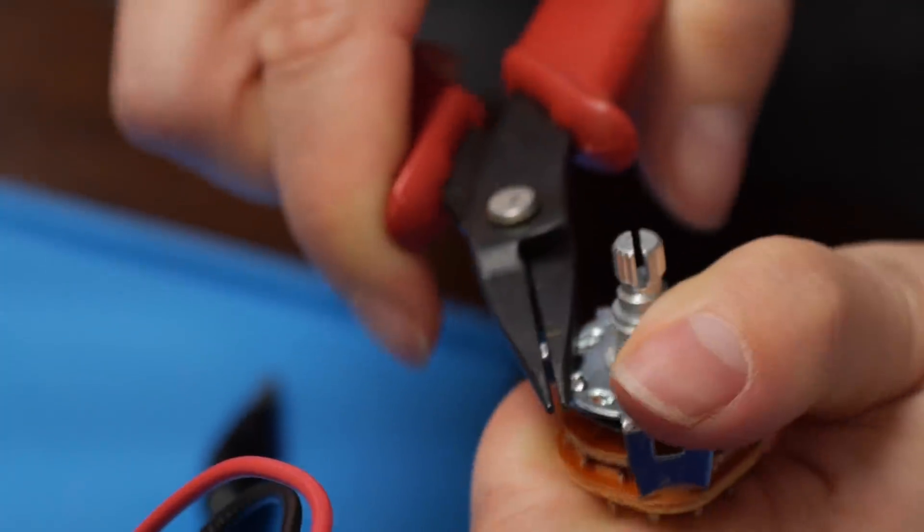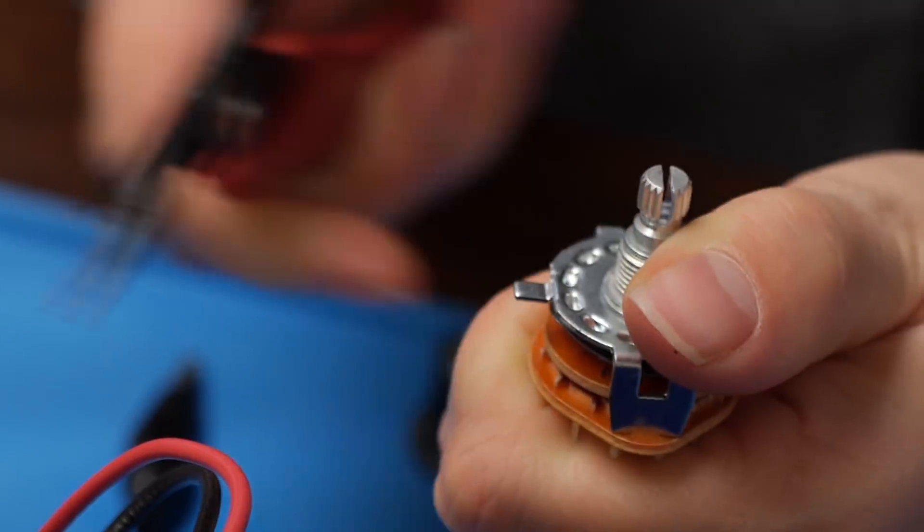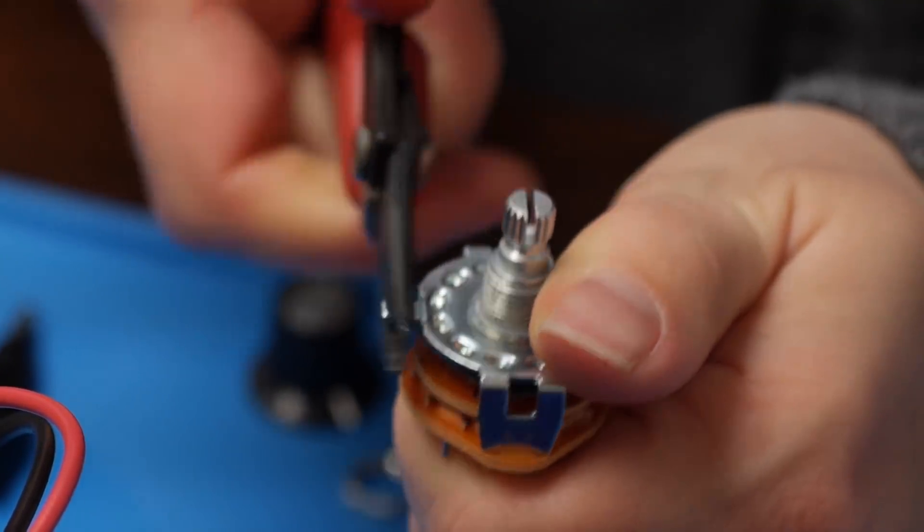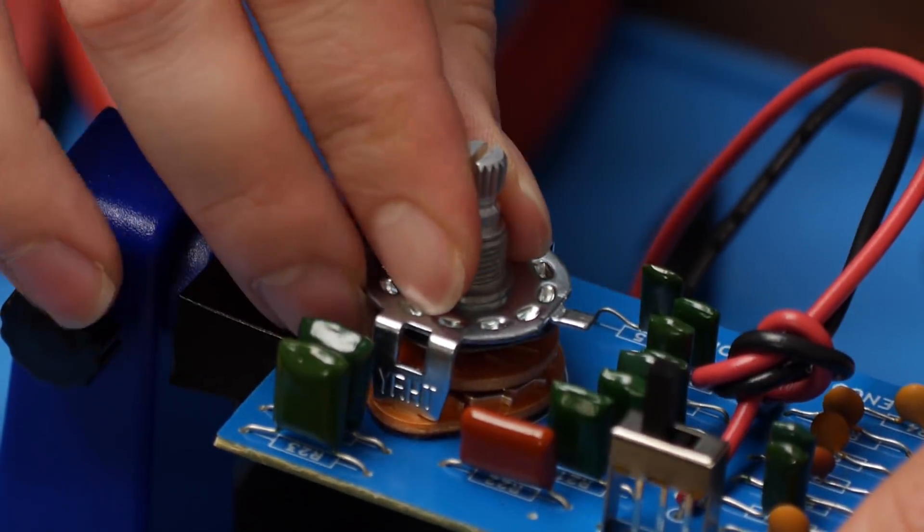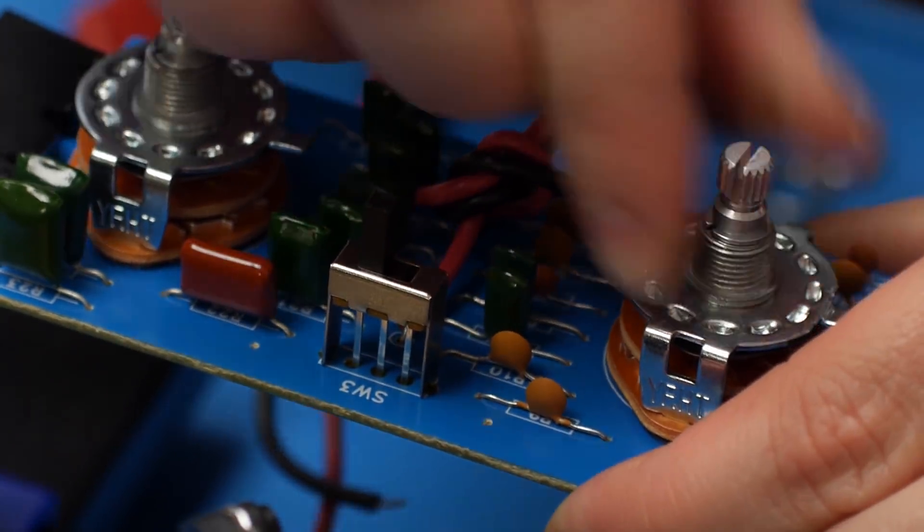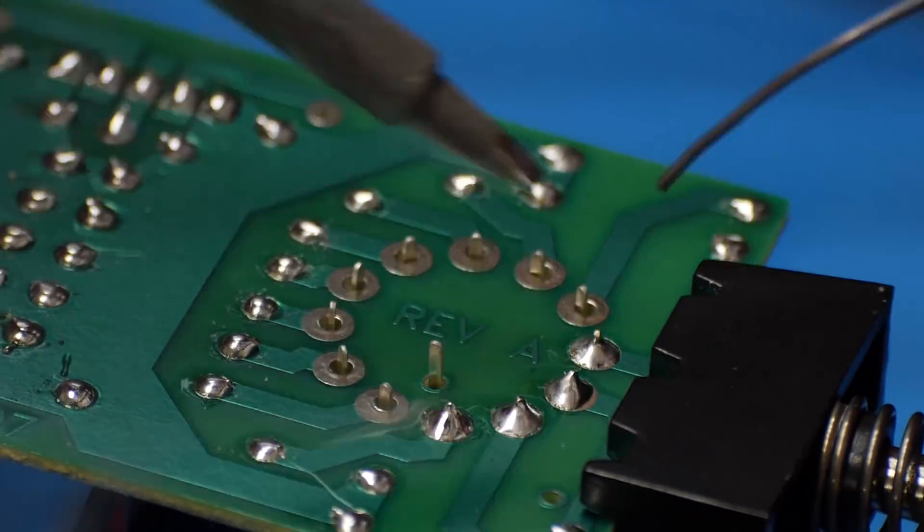Now take the rotary switches. Bend the tabs down. Insert the switches into the PCB and solder them into place.